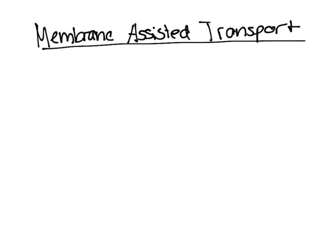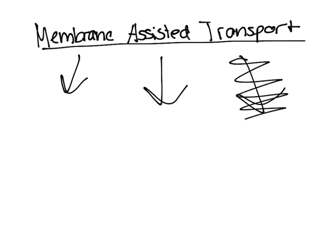What happens is you need a different way to get substances inside the cell — or to release them out. There are two types of membrane-assisted transport: there's exocytosis and endocytosis.